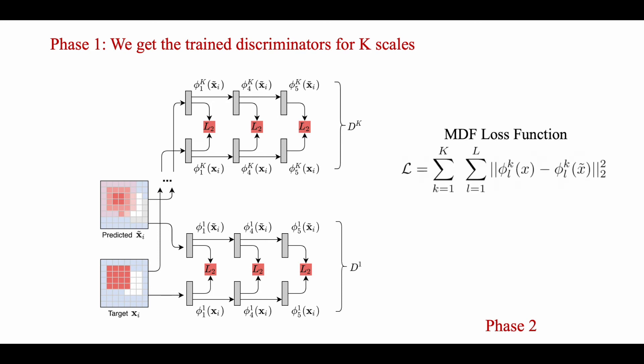Our MDF loss is the sum of the mean squared error between feature maps of all layers and all scales. The proposed MDF loss can simply replace the conventionally used VGG loss for training existing image restoration networks.